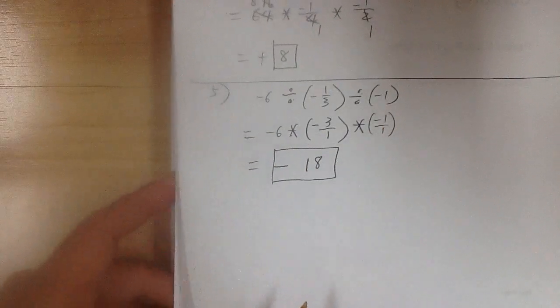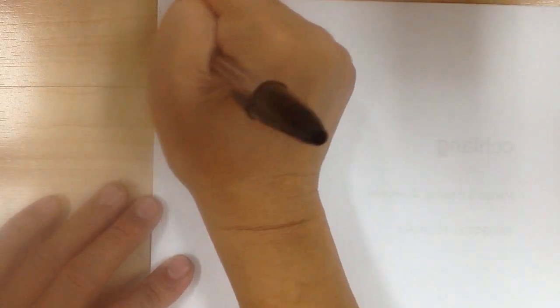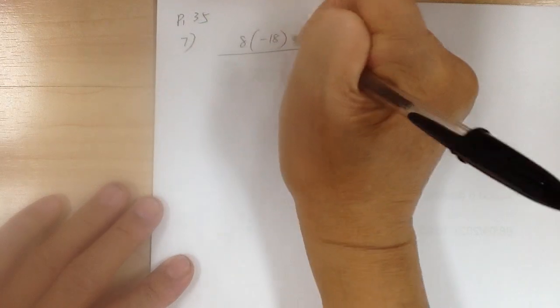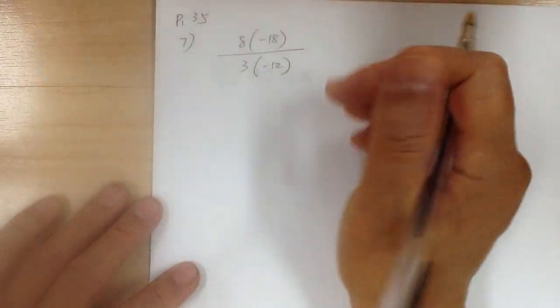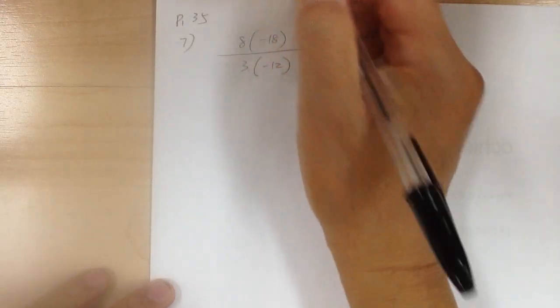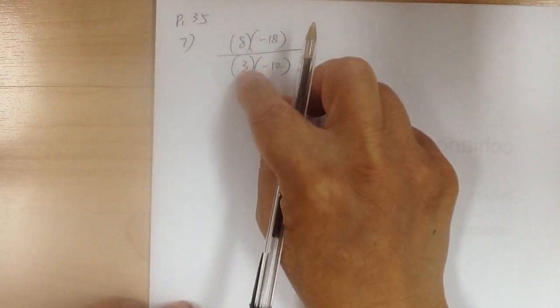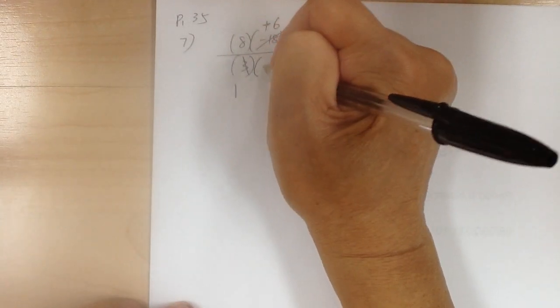Let's go to the next one. Number 7: we have 8 times negative 18 over 3 times negative 12. This is already put all together, so what you can do is start to reduce. 3 and 18 are divisible by 3 — divide by 3, you get 1; divide by 3, you get negative 6. Make sure you keep your negative. Actually, negative and negative can cancel out.